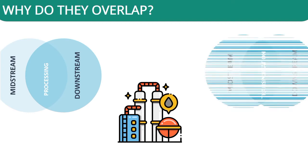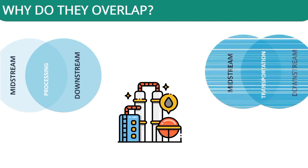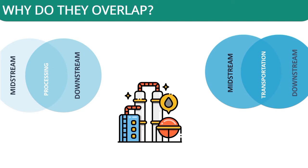The second overlapping operation concerns transportation. Both midstream and downstream engage in transportation activities. However, they differ in the sense that downstream's transportation and storage concerns finished petroleum products, but midstream deals with the transportation of raw crude to the refineries through pipelines or tanks.